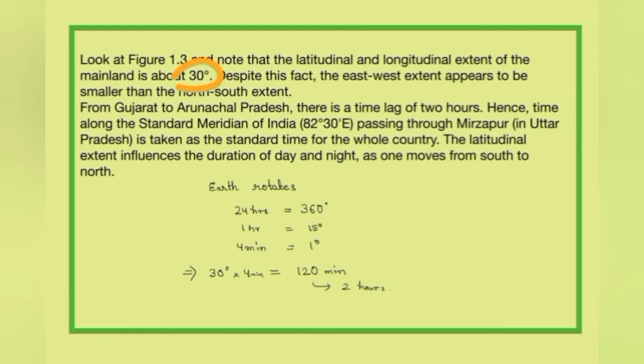Despite this fact, the east-west extent appears to be smaller than the north-south extent. From Gujarat to Arunachal Pradesh there is a time lag of 2 hours. Hence, the time along the Standard Meridian of India — 82°30' East, passing through Mirzapur in Uttar Pradesh — is taken as the standard time for the whole country.